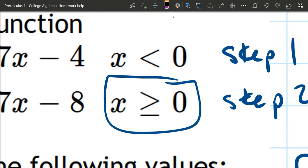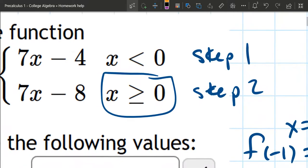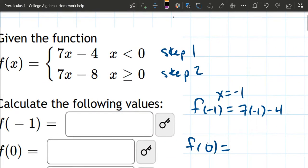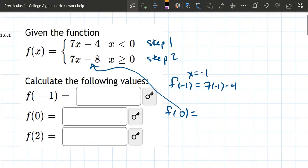It's actually happening in step 2, because we have the greater than or equal to 0. So we're going to be plugging this into step 2, and that gives us 7 times 0 minus 8.